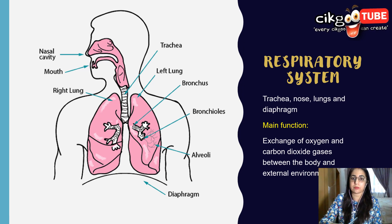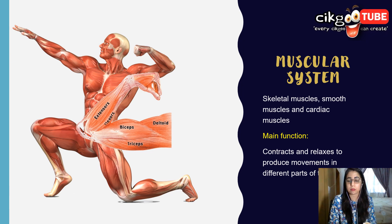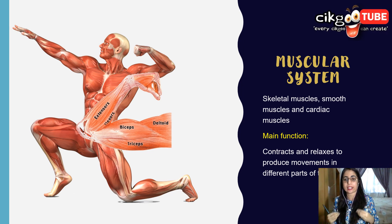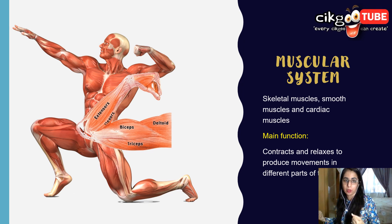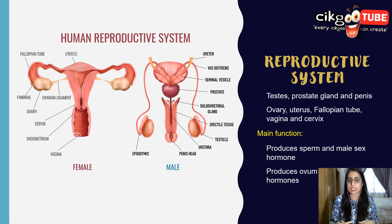The muscular system consists of skeletal muscles, smooth muscles, and cardiac muscles — which you saw in subtopic 2.3. Its function is to contract and relax to produce movement in different parts of the body.